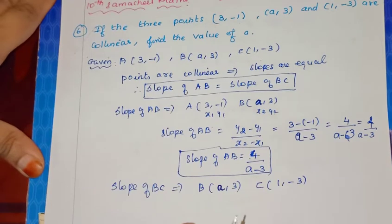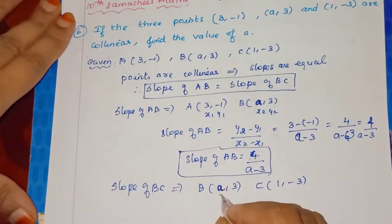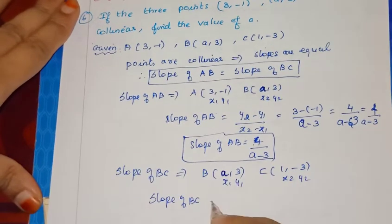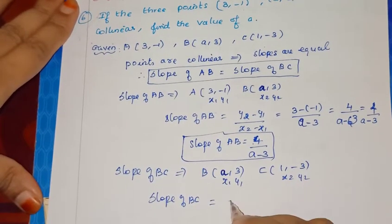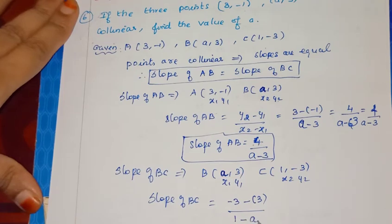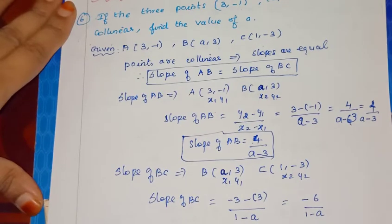When you are writing from the question paper, you have to write it very clearly. So x1, y1 is B (a, 3); x2, y2 is C (1, -3). Now slope of BC using the same formula: y2 minus y1 by x2 minus x1. That is minus 3 minus 3, by 1 minus a. So minus 3 minus 3 equals minus 6, by 1 minus a. Slope of BC equals minus 6 by (1 minus a). This is equal to slope of AB.